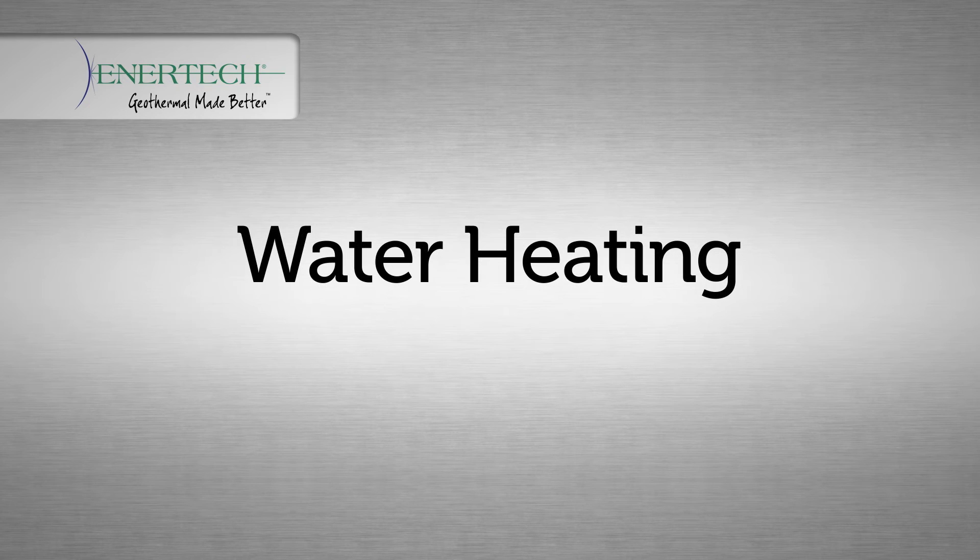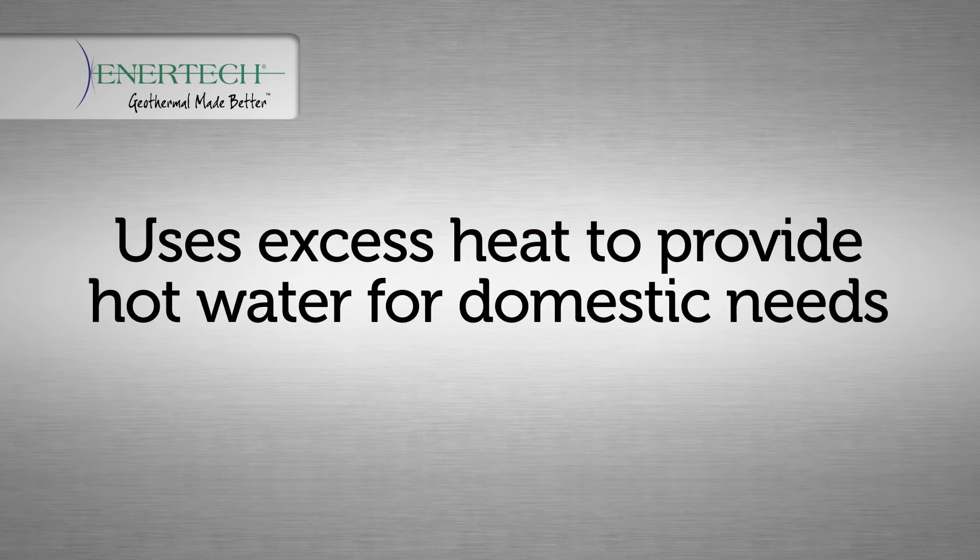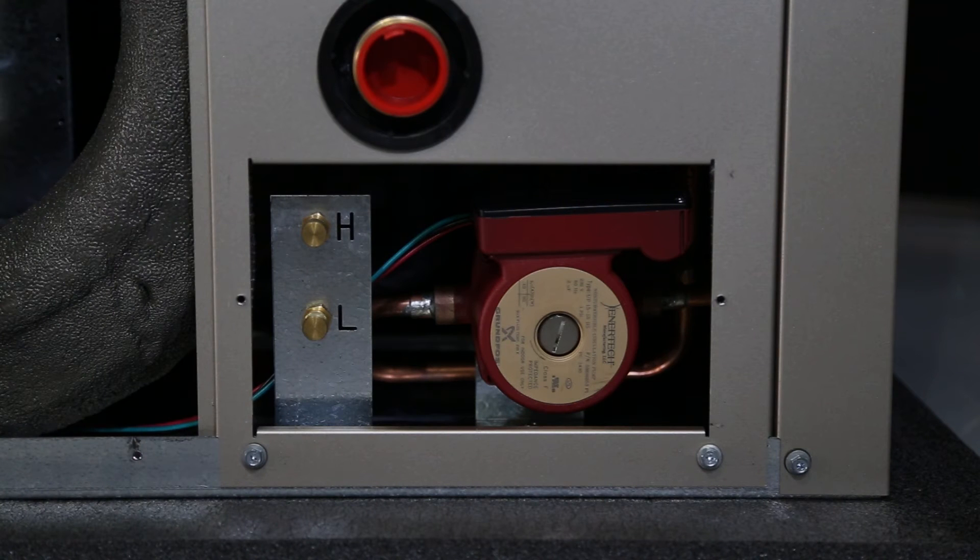Water heating is standard on all residential units. Units may be ordered without. It uses excess heat during both heating and cooling cycles to provide hot water for domestic needs. A double wall desuperheater coil exchanger is located between the compressor and the reversing valve. It extracts superheated vapor to heat domestic water while satisfying its heating and cooling needs.